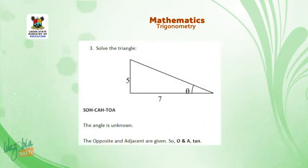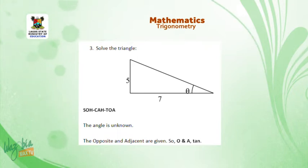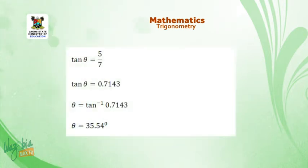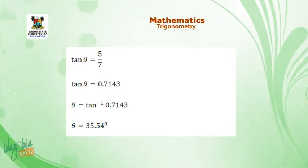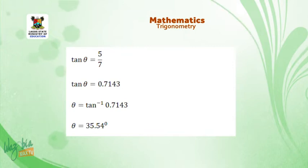Another question: find angle theta given the opposite side is 5 and the adjacent side is 7. Since we have opposite and adjacent, we use TOA — tangent. So tan θ = 5/7 = 0.7143. Using the calculator, press tan inverse of 0.7143, which gives θ = 35.54 degrees.